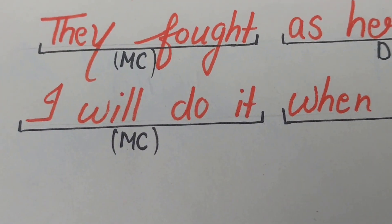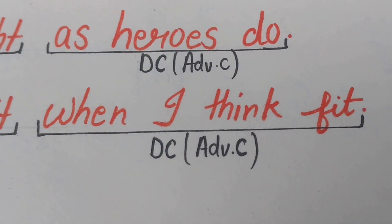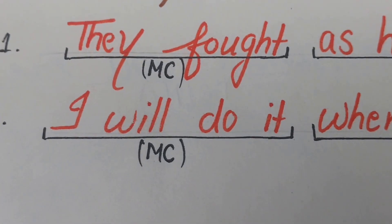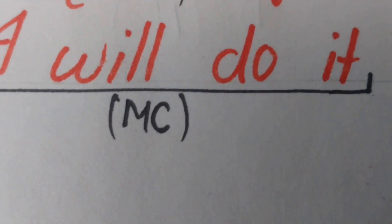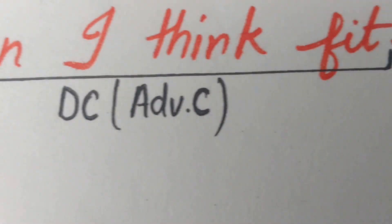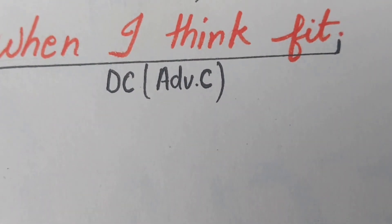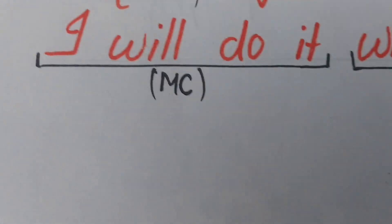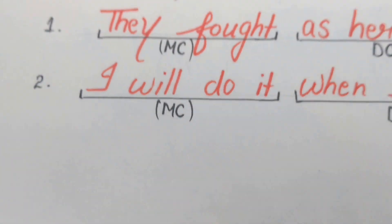Another example: 'I will do it when I think fit.' In this, 'I will do it' is the main clause and 'when I think fit' is the dependent clause, depending on the main clause, 'I will do it.' Here I will end. Bye.